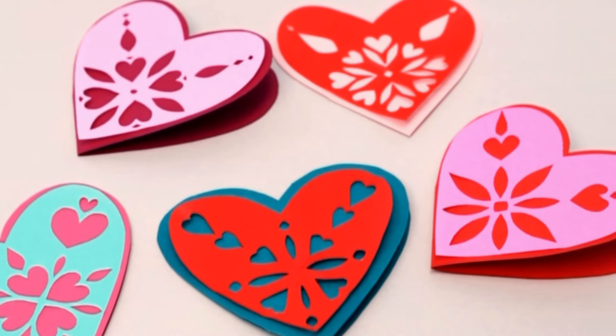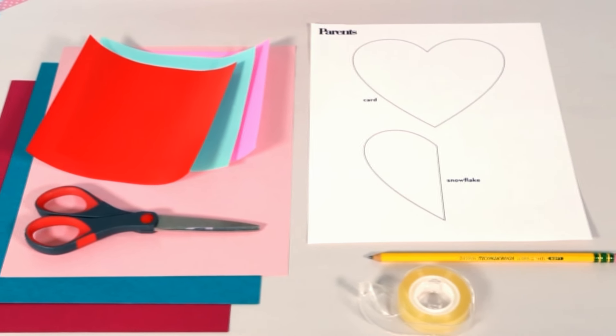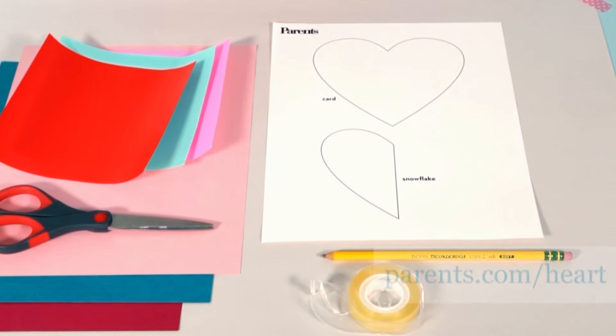For this project you'll need colored cardstock, colored origami paper, scissors, double stick tape, a pencil, and the templates printed from parents.com slash heart.